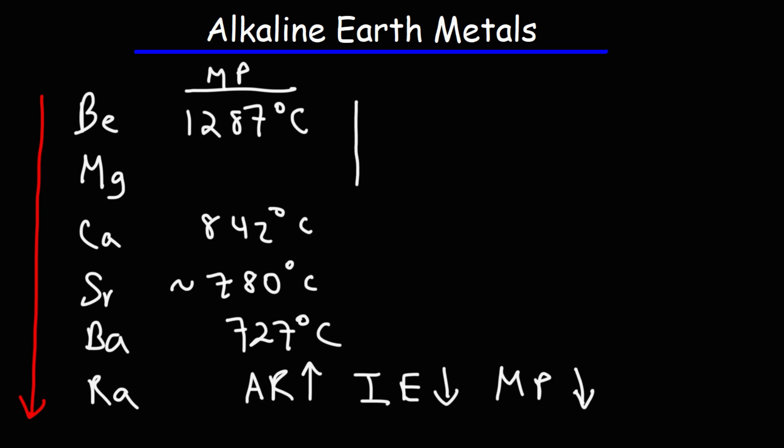Notice that generally speaking, the melting point is decreasing as you go down. The melting point for magnesium is the lowest of the metals listed here at 650. So magnesium is the oddball for some reason. But generally speaking, as you go down the group, the melting point decreases. The ionization energy decreases but the atomic radius increases.